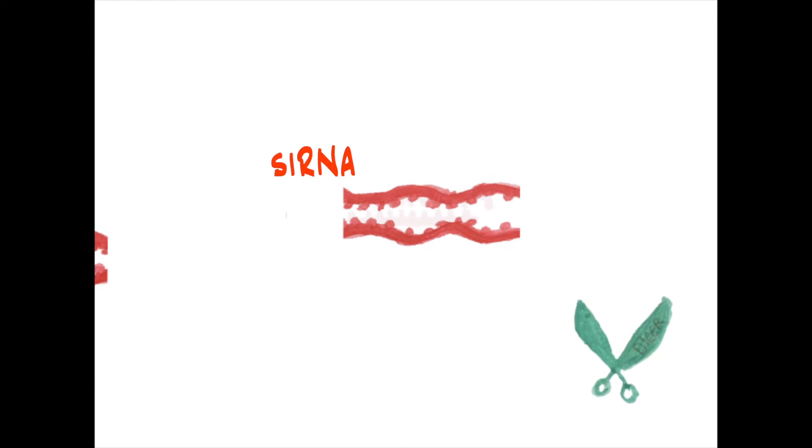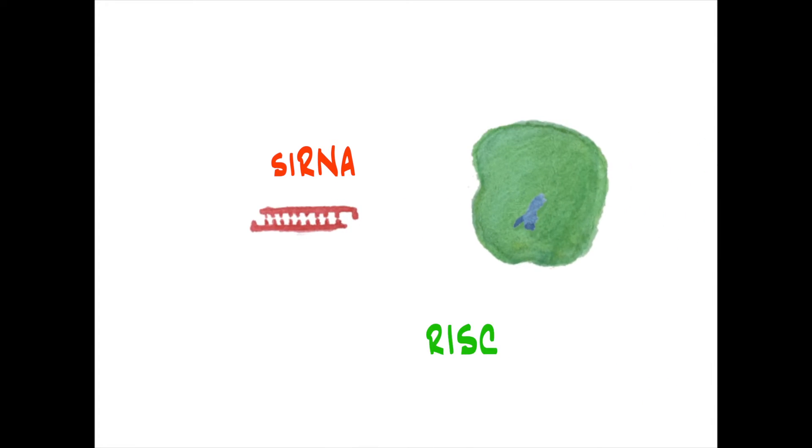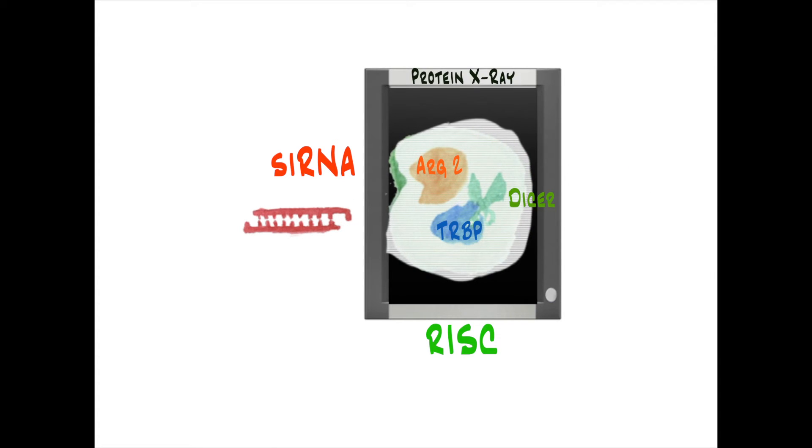Dicer cuts the hairpin part of the miRNA to make 22 nucleotide long sections called short-interfering RNA, or siRNA.